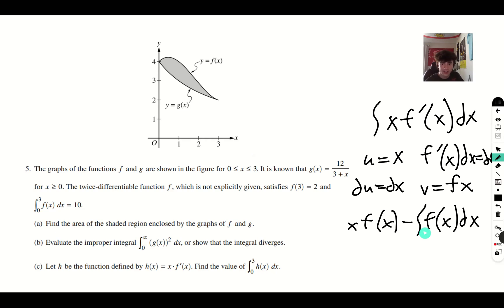So from here, what we're going to get is x of 3 minus x of 0. So we get 3 times f of 3 minus 0 times f of 0, which is just going to be 0 because 0 times anything is 0. So 3 times f of 3 is going to be 6 minus the integral of f of x dx from 0 to 3, which we know already is 10, gives us a value of negative 4.